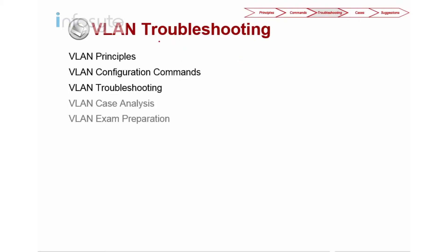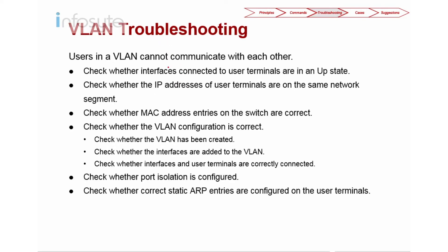Now let's look into VLAN troubleshooting. Here we have some of the troubleshooting checks that you need to look into, assuming that you have some VLAN communication problem. The user complained that they cannot communicate with each other. So what are the first things that you need to check?